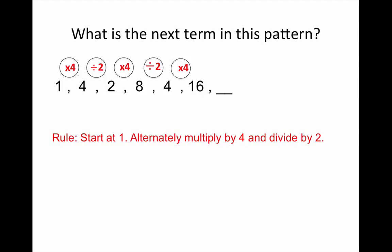So, we have a clear pattern rule to start at 1, and alternately multiply by 4 and divide by 2. The last step we did was multiply by 4, so the next step is going to be divide by 2. And 16 divided by 2 makes 8.